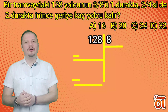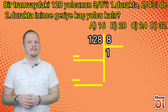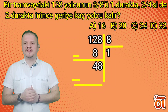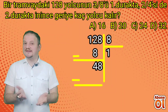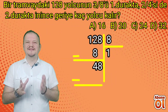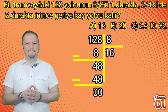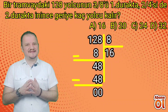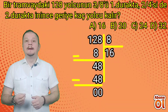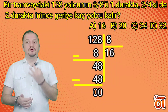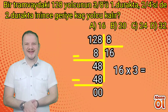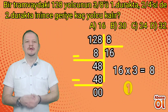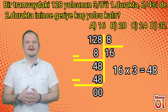128'i 8'e bölelim: 12'nin içinde 8 bir defa var; 1×8=8, 12-8=4; 48'in içinde 8 altı defa var; 6×8=48. Böylece 128÷8=16 buluruz. 1. durakta inen yolcu sayısını bulmak için 16 ile 3'ü çarpıyoruz: 16×3=48. 1. durakta 48 yolcu inmiştir.